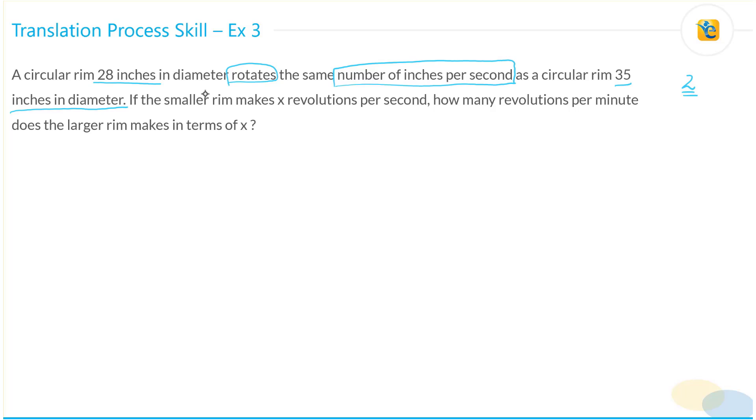Now, if the smaller rim, the 28 inch rim, makes X revolutions per second, how many revolutions per minute does the larger rim, the 35 inch rim, make in terms of X?